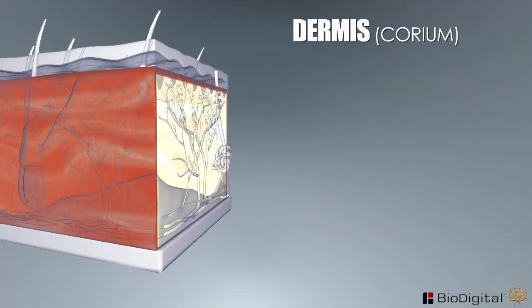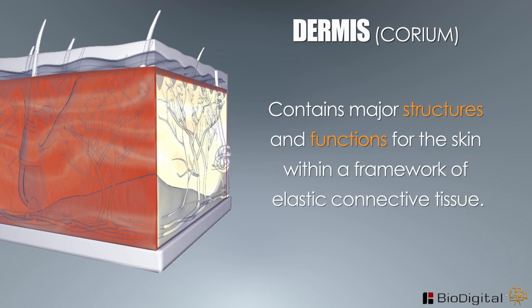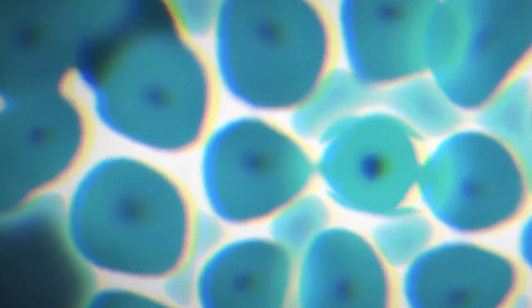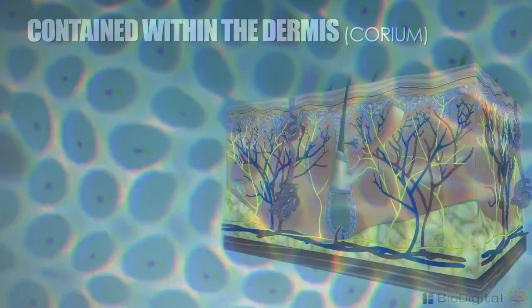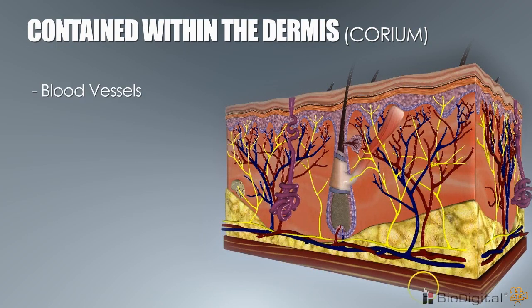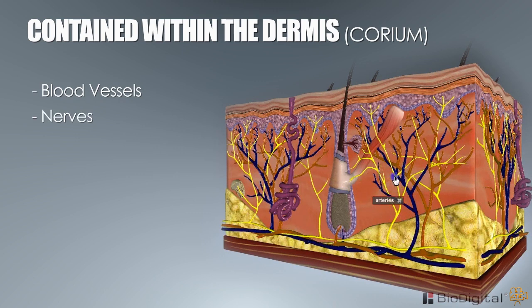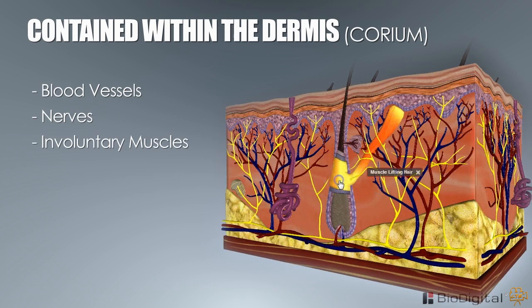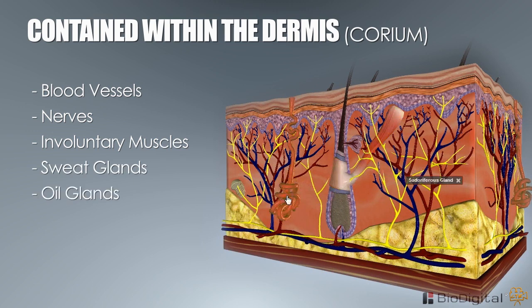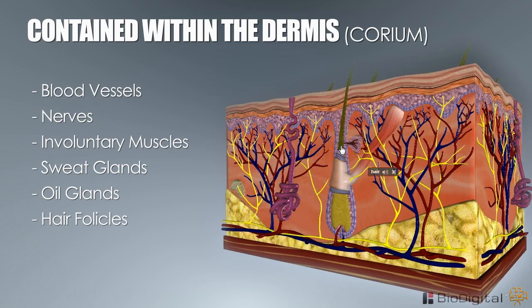The dermis, also known as the corium or the true skin, contains major structures and functions for the skin within a framework of elastic connective tissue. This is where the skin comes to life. Contained within the dermis are blood vessels, nerves, involuntary muscles, sweat glands, oil glands, hair follicles, and the papilla.